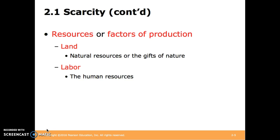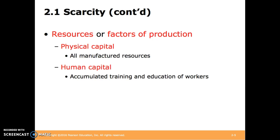Land represents natural resources. For the farmer, land would be his fields and anywhere he stores any of the goods that he brings in. Labor is the human resource. For the farmer, it would be field hands, his own labor, or any family members or other workers that do work on the farm. Physical capital is all manufactured resources. For the farmer, it would be his tractors or any other implements that he uses with the tractors, as well as any silos.